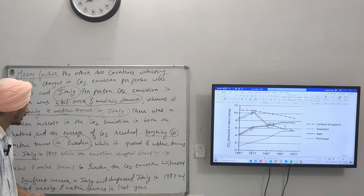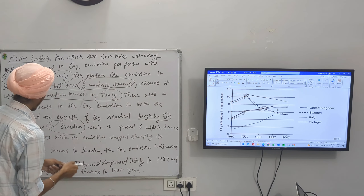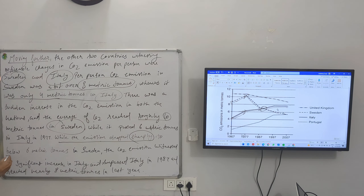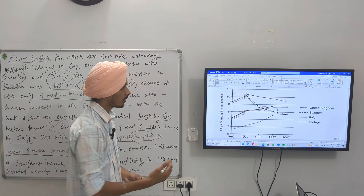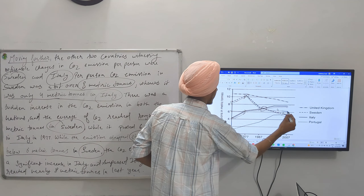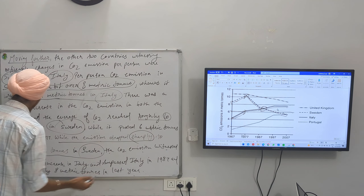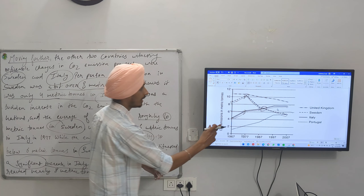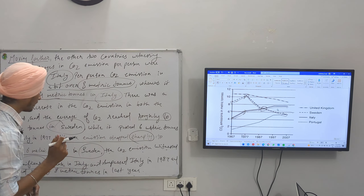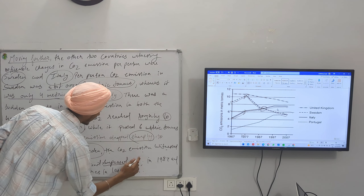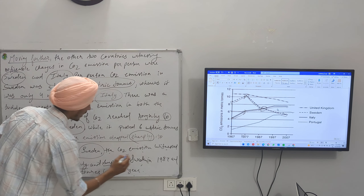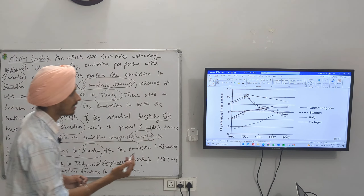While the emission dropped sharply to below 6 metric tons in Sweden, the CO2 emission witnessed a significant increase in Italy, and Italy surpassed Sweden in 1987 — as you can see, in that year Italy's line is crossing Sweden's. It reached nearly 8 metric tons in the last year. Here our body paragraph two is also complete.